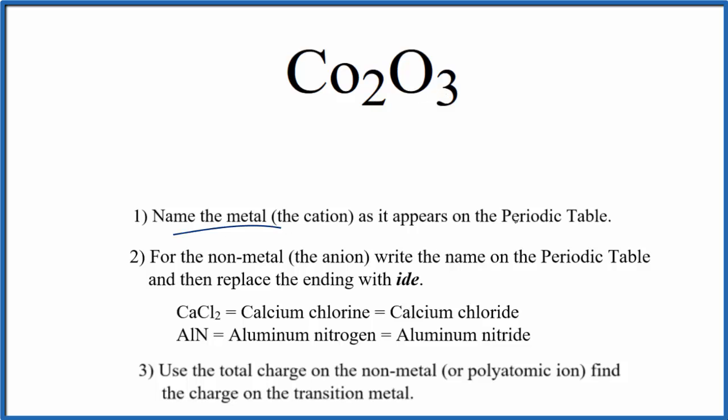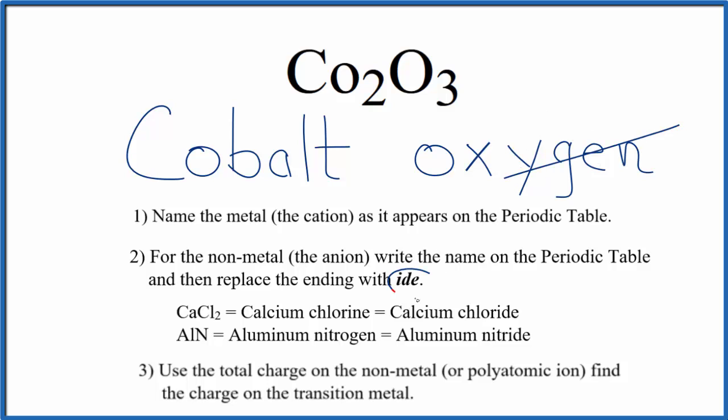First, we'll write the name for the metal as it appears on the periodic table. CO, that's cobalt. Next, we'll write the name for the non-metal as it appears on the periodic table. O, that's oxygen, so lowercase o, and then we cross this ending out here and change it to ide.